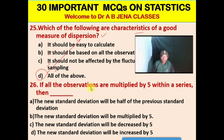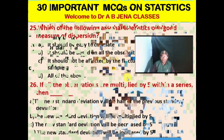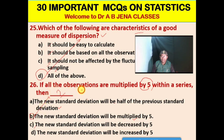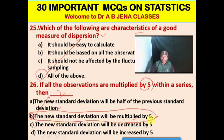Next MCQ: If all the observations are multiplied by 5 within a series, what will happen? A. The new standard deviation will be half of the previous. B. The new standard deviation will be multiplied by 5. C. The new standard deviation will be decreased by 5. D. The new standard deviation will be increased by 5. B is the right option. The new standard deviation will be multiplied by 5.